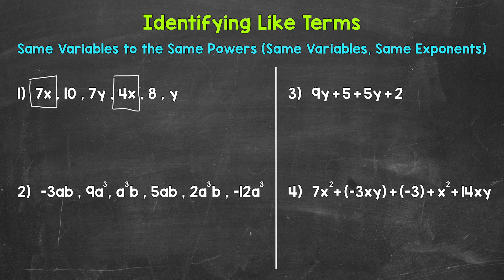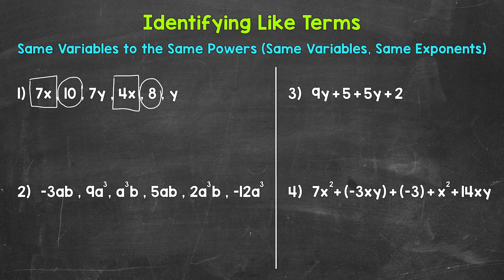Next, we have 10. This is called a constant term, or constant, because the value stays the same — it stays constant. There aren't any attached variables that can change the value of this term. So let's circle 10 to keep it separated from the other like terms, and the like term is going to be 8. 8 is also a constant term, so constant terms are like terms.